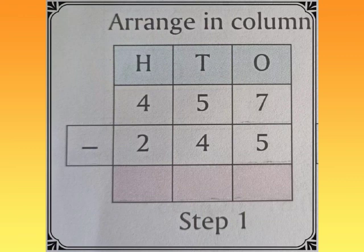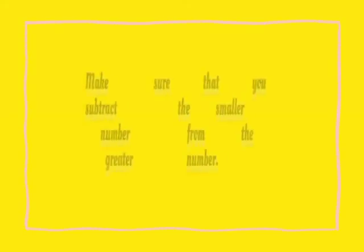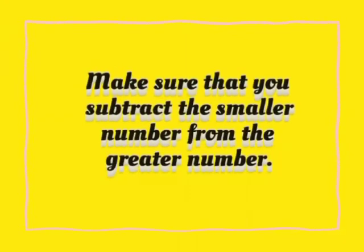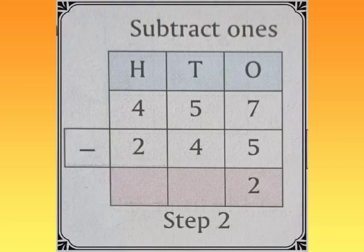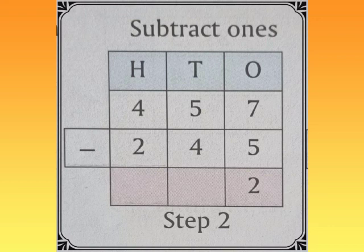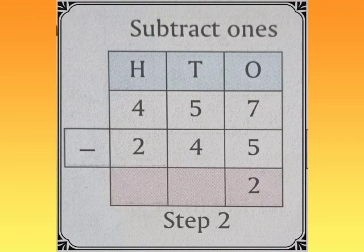In the second step, make sure that you subtract the smaller number from the greater number. First we will subtract the ones column. As we can see in the image, in the ones column we have seven minus five. The answer will be two.